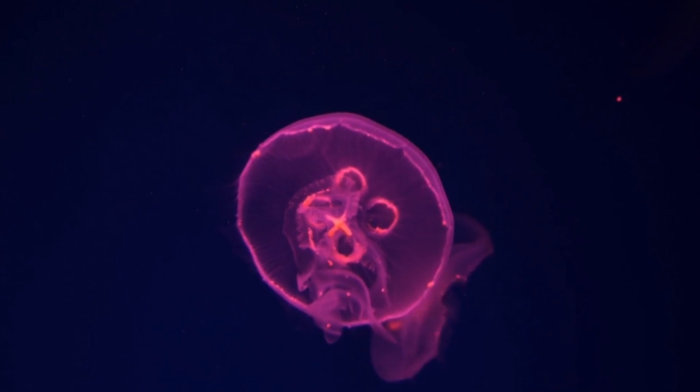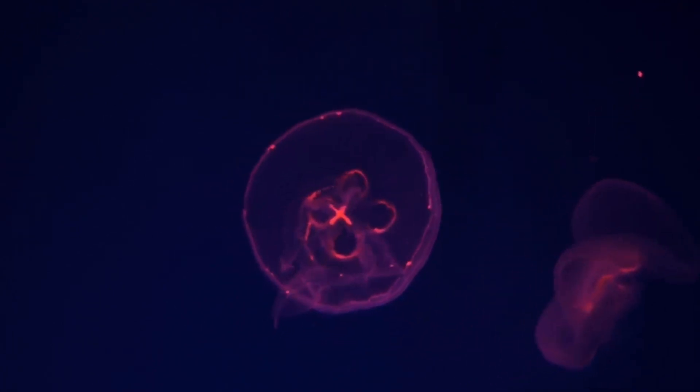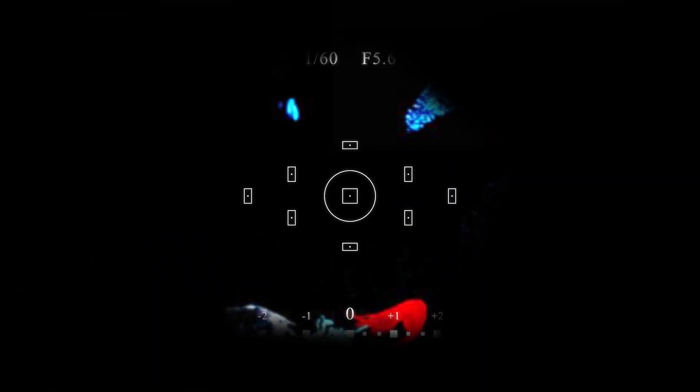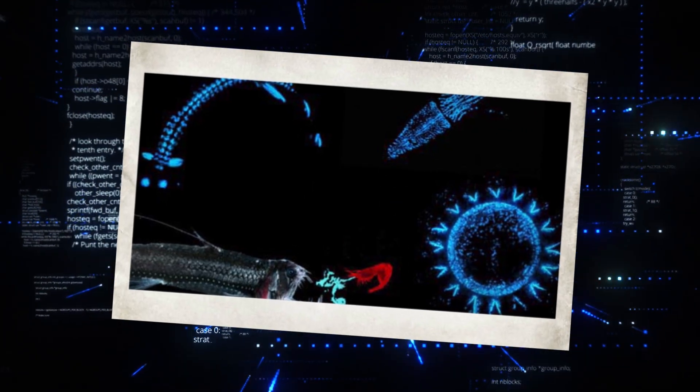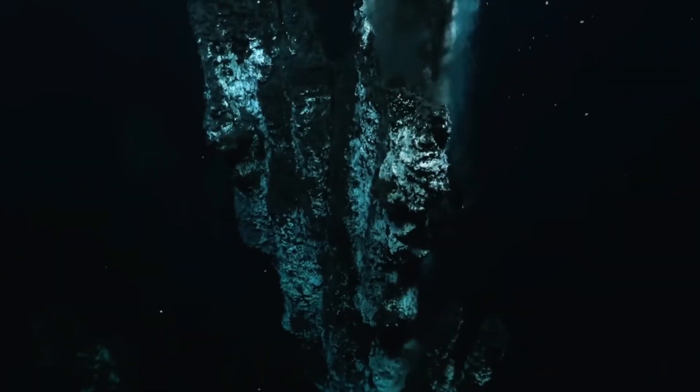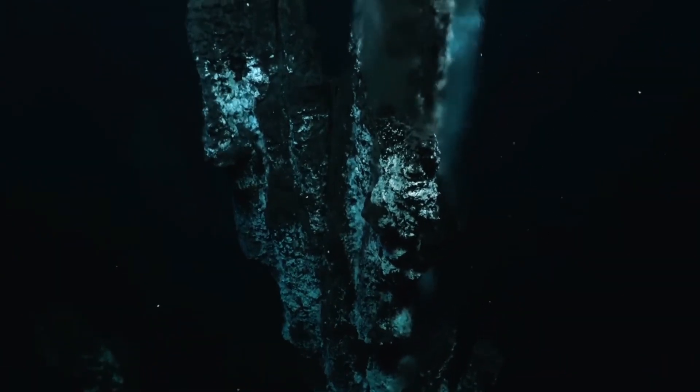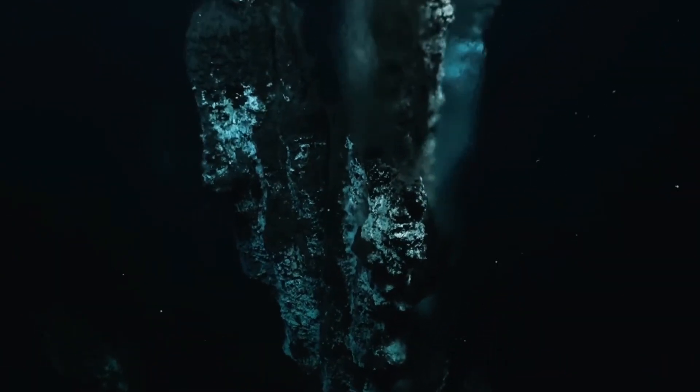Bioluminescence allows organisms to create their own light source, effectively expanding their ability to interact with their environment. Whether it's used for finding food, avoiding predators, or locating mates, the ability to control light emission in a dark world is invaluable.